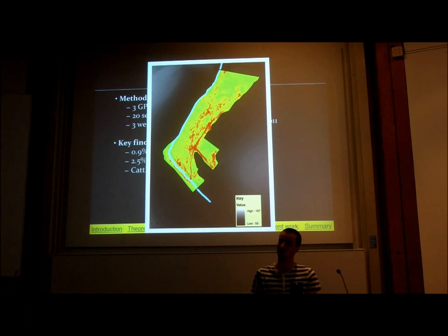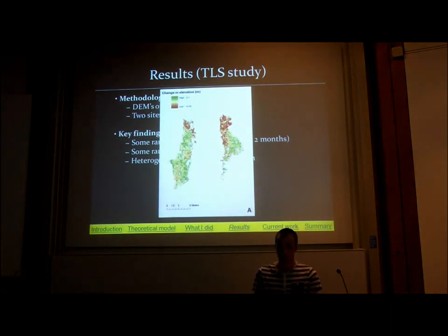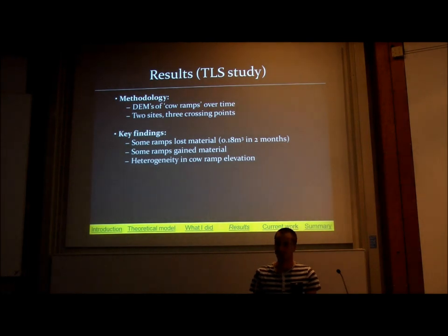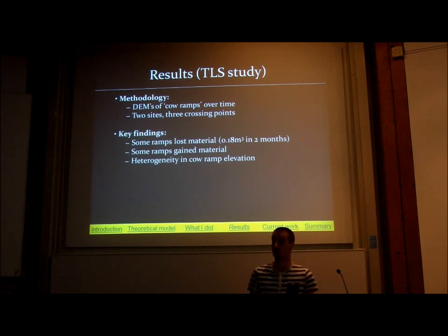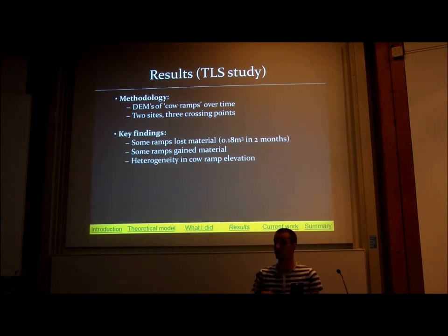The other question was about the bank increases — could that just be a change in vegetation rather than the cows? Definitely, yes. Removing the vegetation effects from laser scan data is a real issue, though there are ways around it. Some of the laser scans are better than others. For example, the 0.8 cubic metres loss of bank material over two months — I think that's really representative from two good scans and shows what's actually going on. But it's also undeniable that there is heterogeneity in the elevation of the cow ramp, and it changes over time due to the presence of cattle.